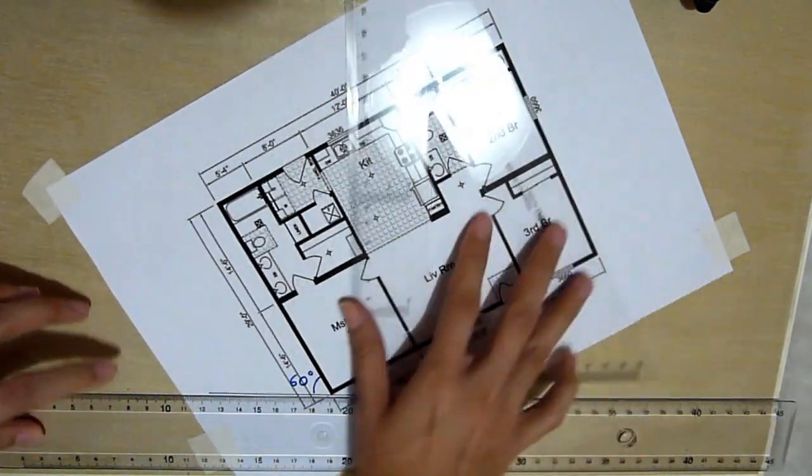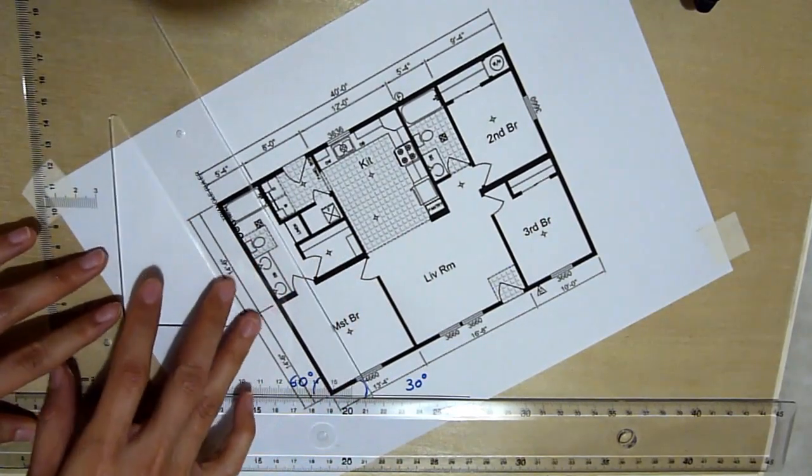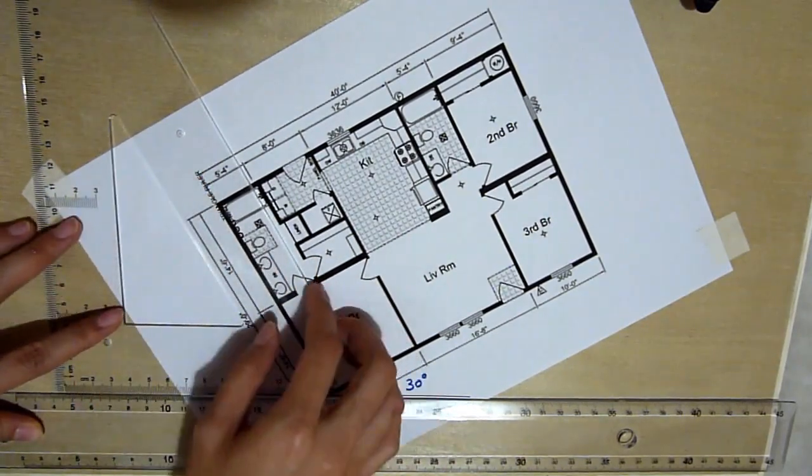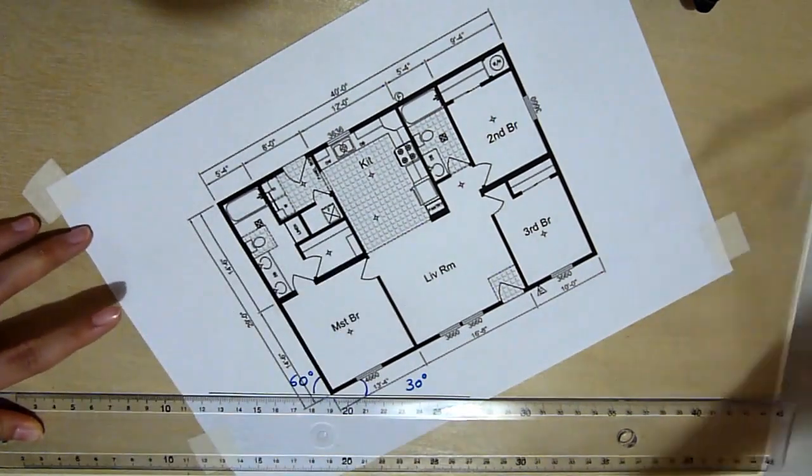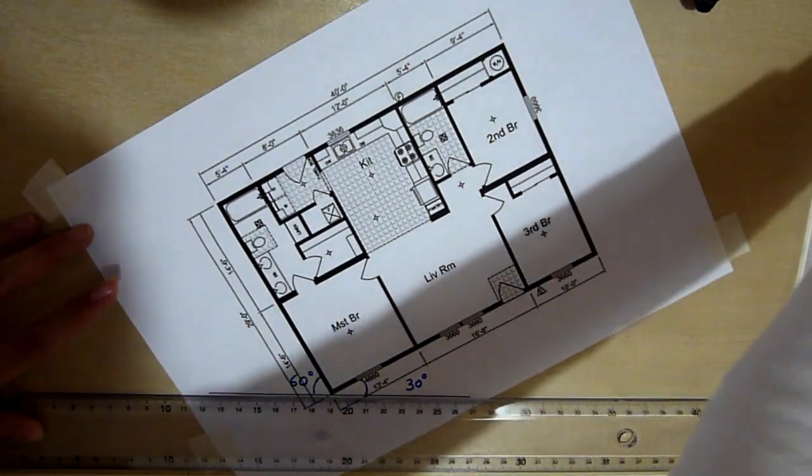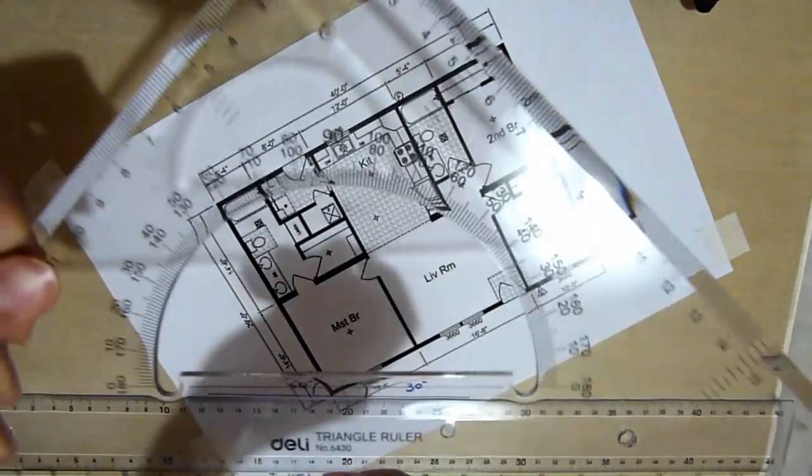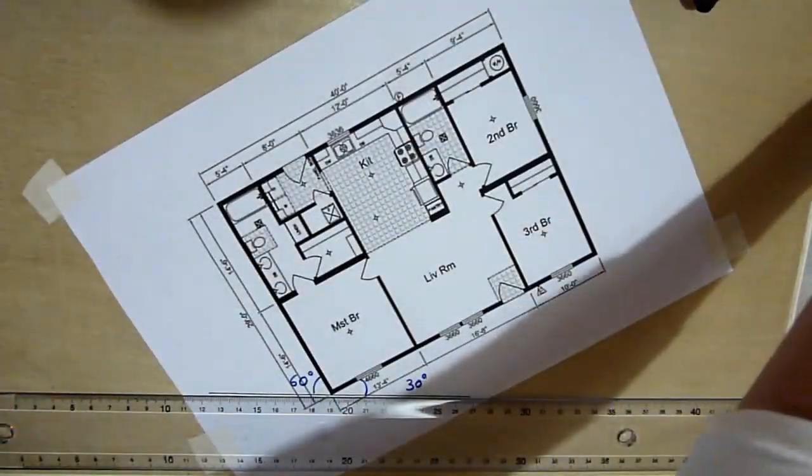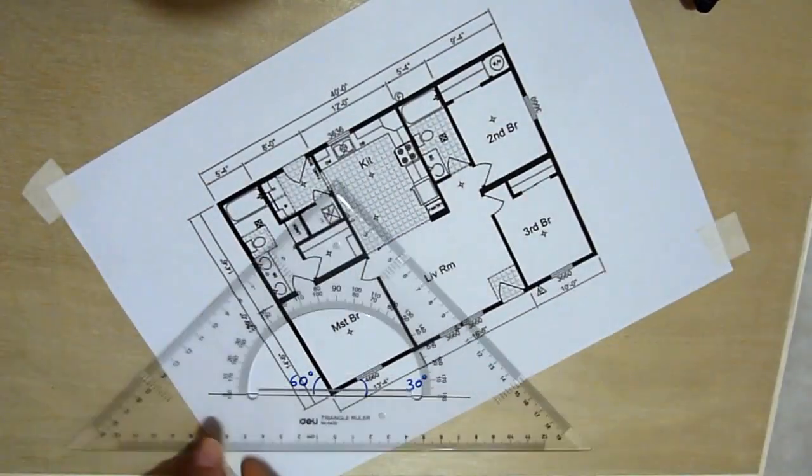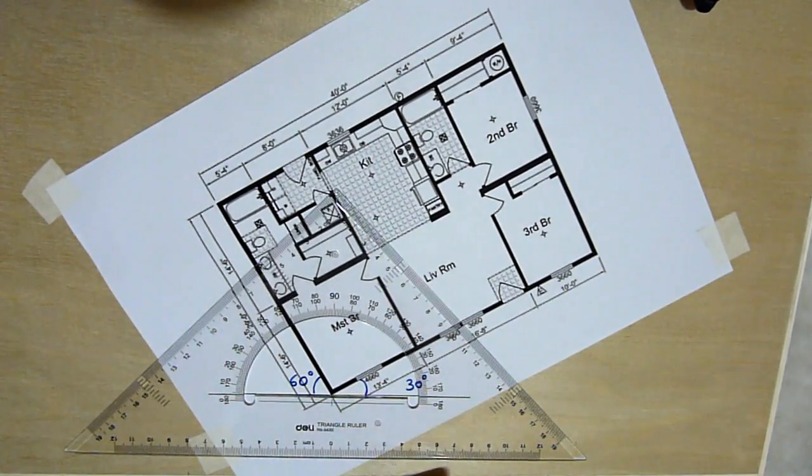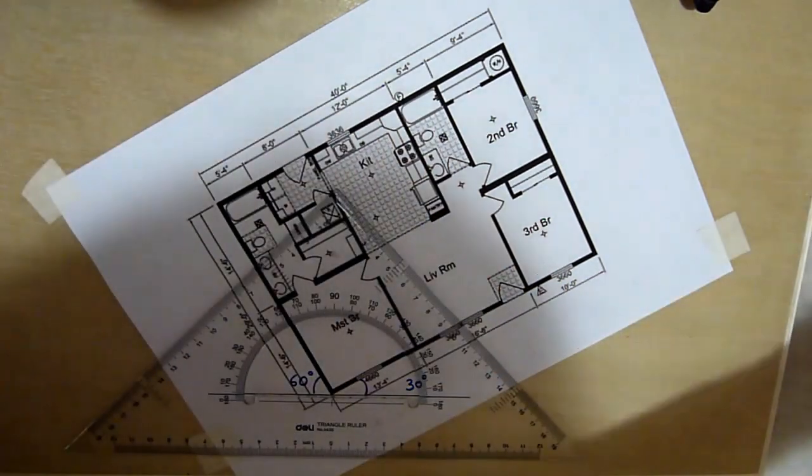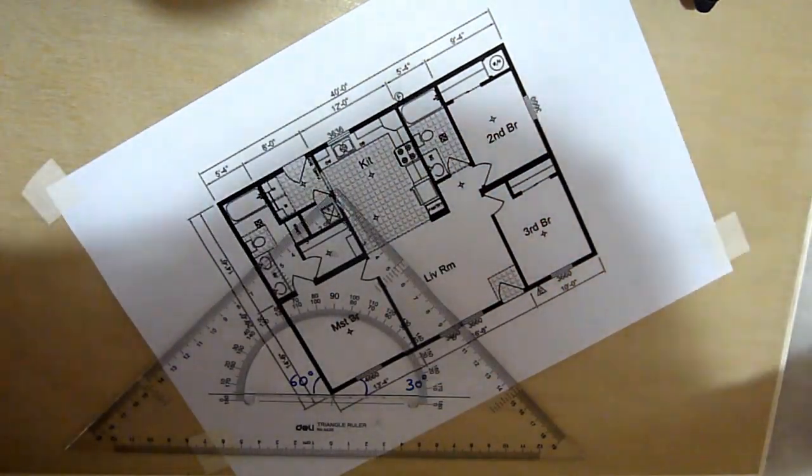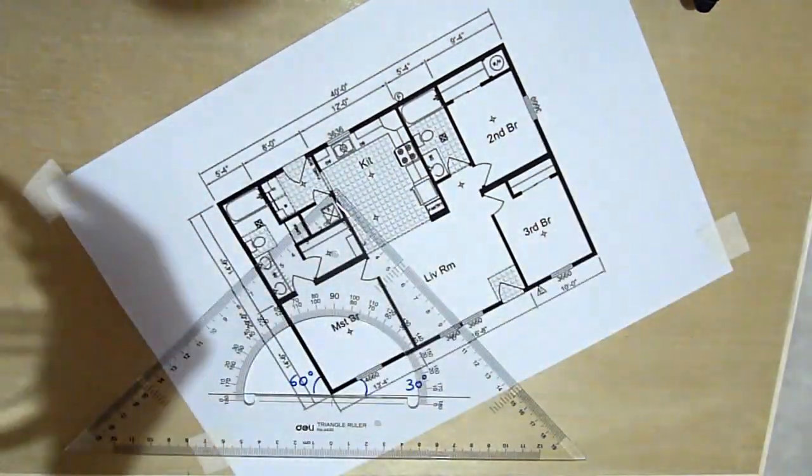Now slide this over and you'll find that the wall is actually aligned to this 60 degree. There are many ways to achieve this 30, 60 degree, you could use a protractor to do it like so to check the 30 degree or the 60 degree.